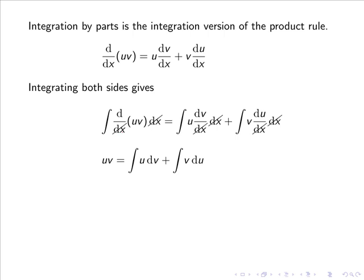The dx terms cancel out in each integral. In our first integral, we have ∫d(uv), and if we integrate d(uv), we simply get uv.